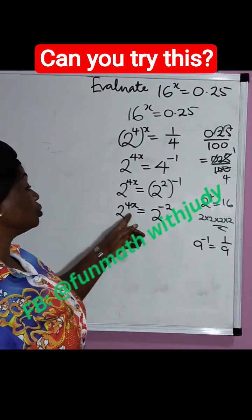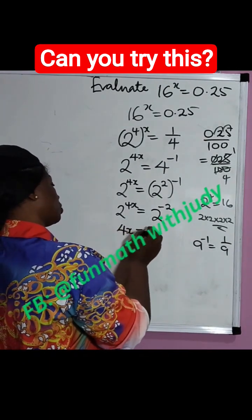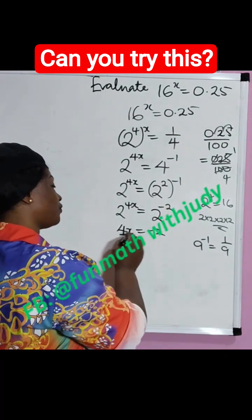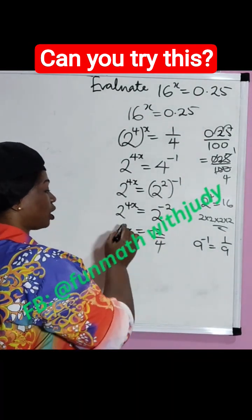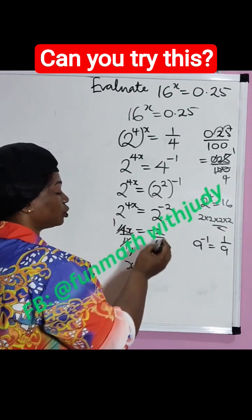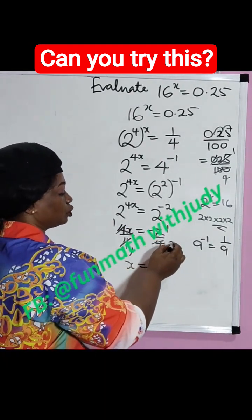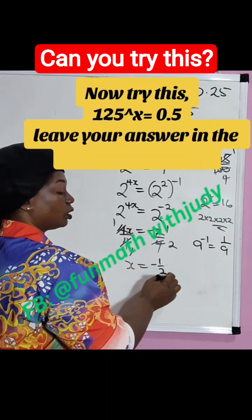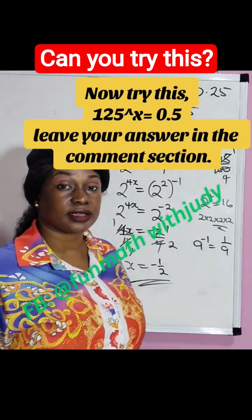Since our base numbers are equal, we equate the exponents: 4x equals minus 2. Dividing both sides by 4 gives us x equal to minus 2 over 4, which simplifies to x equals minus 1 over 2. And this will be our answer.